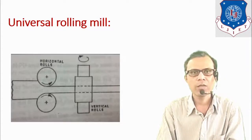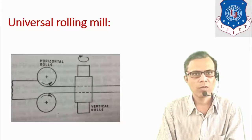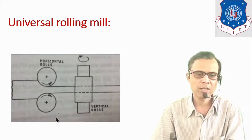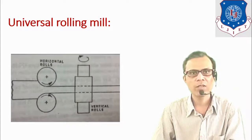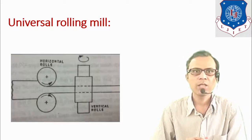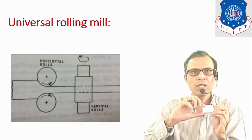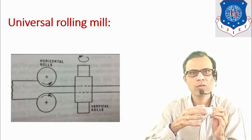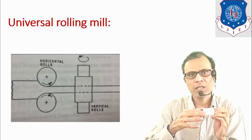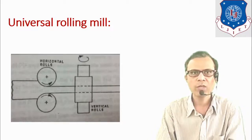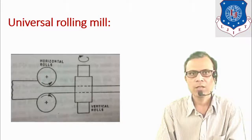The universal rolling mill consists of horizontally placed rolls, and at one or both ends it may also have vertical rolls. The cross section of the workpiece is reduced by the horizontal rolls, while the sides of the product are finished by the vertical rolls. So the universal rolling mill serves two purposes: reducing the cross section as well as finishing the sides or giving the desired shape to the sides of the product.